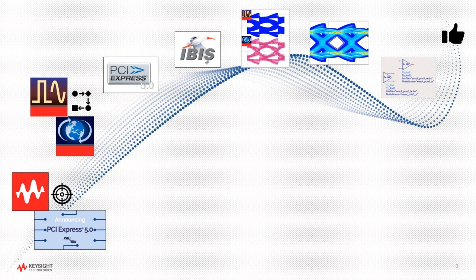In this video segment we'll focus on IBIS-AMI results in ADS mainly with regards to behavior over different channel lengths and verifying the receiver CTLE adaptation feature.